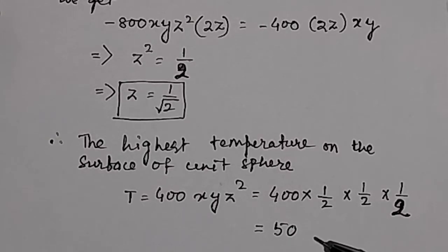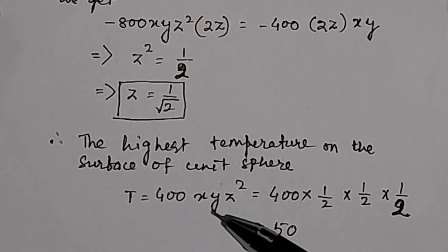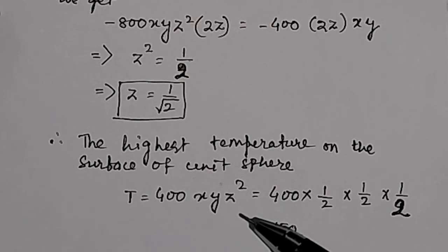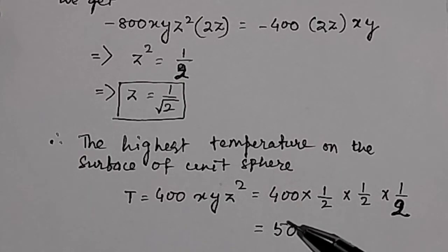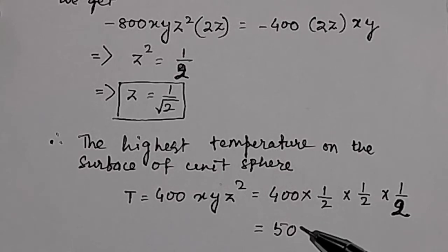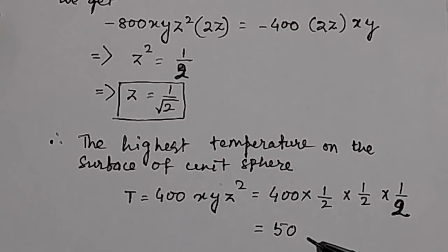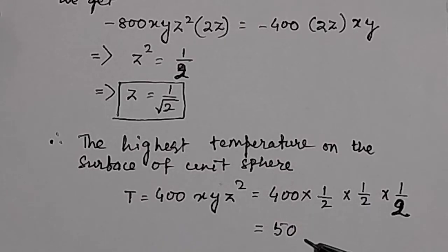There is no unit here. The temperature is 50 at the point (x, y, z) in space, for the function T = 400xyz². This is the highest temperature, because we solved it using constrained maximization via the Lagrange multiplier method. The maximum value of the temperature is equal to 50.